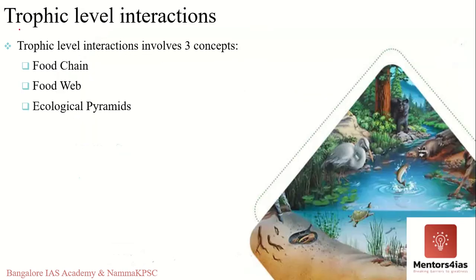Now that we have understood trophic level interactions, there are three concepts involved: food chain, food web, and ecological pyramid. In this video we will cover food chain and food web, and in successive videos we will cover ecological pyramids.